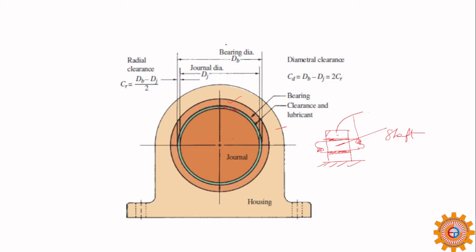Radial clearance means the radius of the bearing minus the radius of the journal. Diametral clearance means the diameter of the bearing minus the diameter of the journal — that is double the radial clearance. While solving problems you have to keep in mind whether it is radial clearance or diametral clearance.